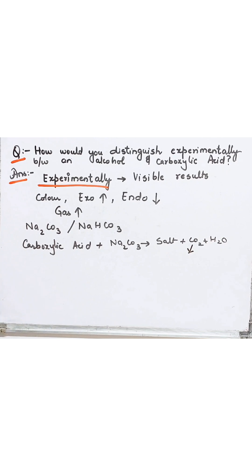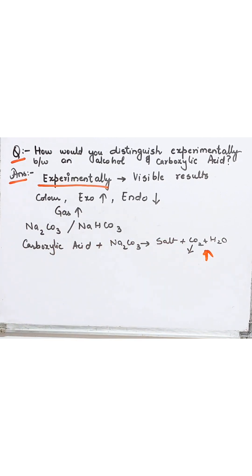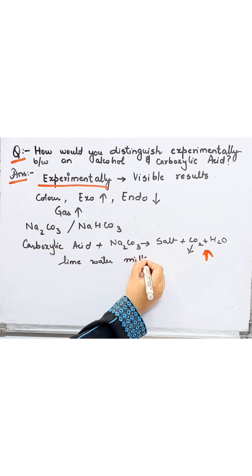When this gas is evolved, what happens is what is the test to find out that CO2 has evolved? Test is lime water test. Your lime water turns milky. It turns milky.